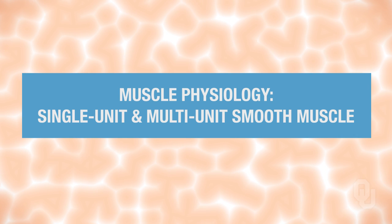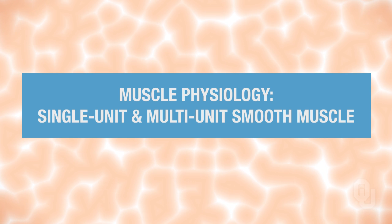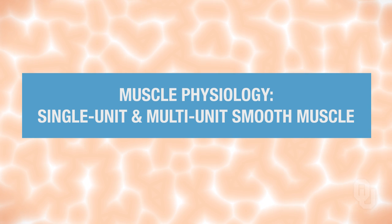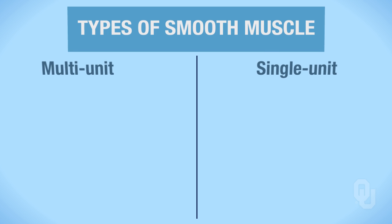This video will compare and contrast the two types of smooth muscle: single unit, also known as visceral smooth muscle, and multi-unit. Multi-unit is in the first column, single unit is in the second column. Single unit is also called visceral smooth muscle, so be sure you know to use those terms interchangeably. Let's take a look at the differences between these two types by looking at several characteristics.